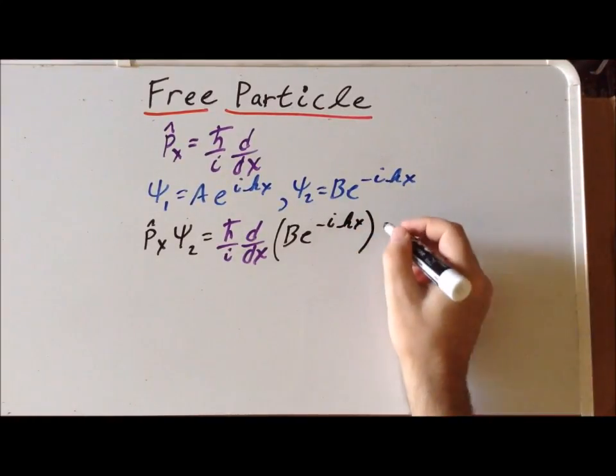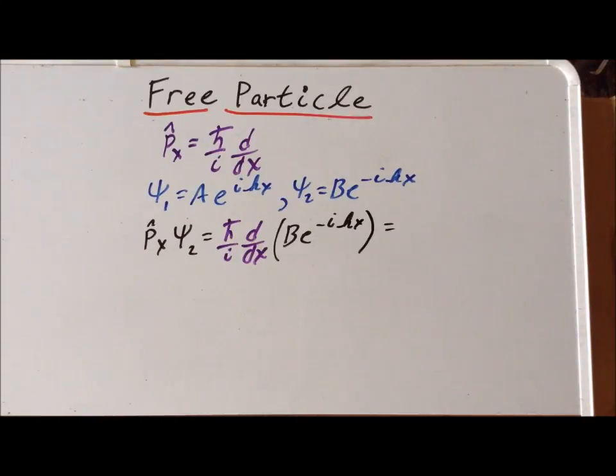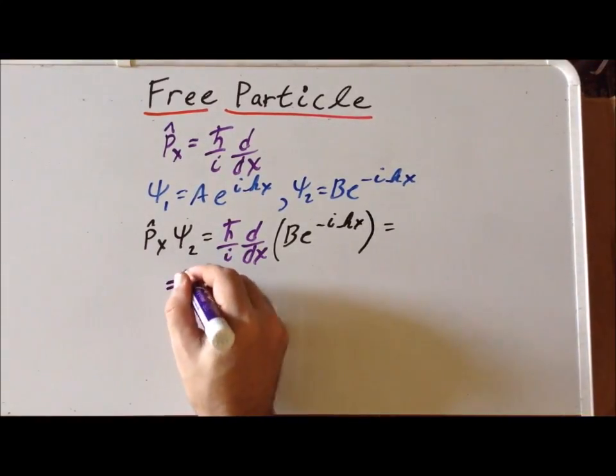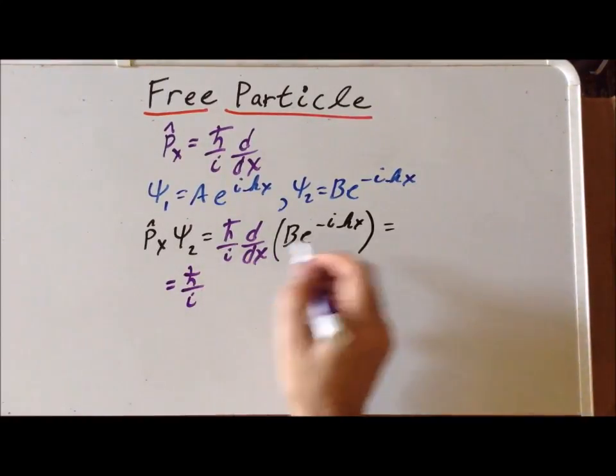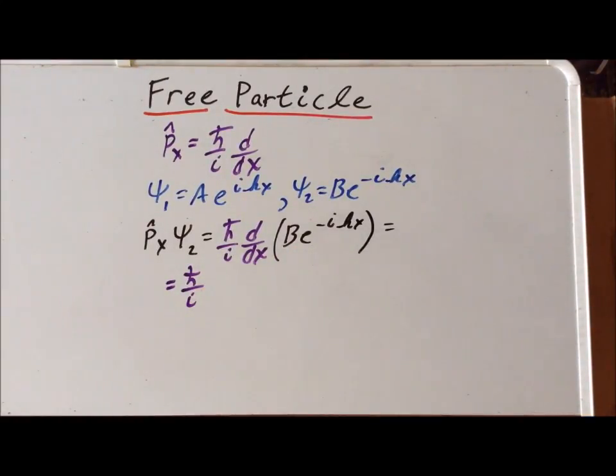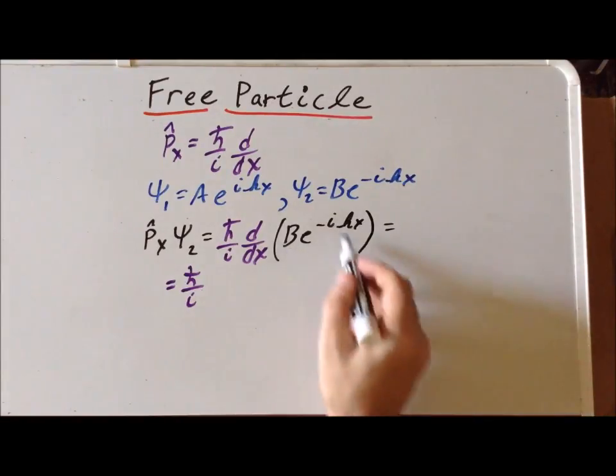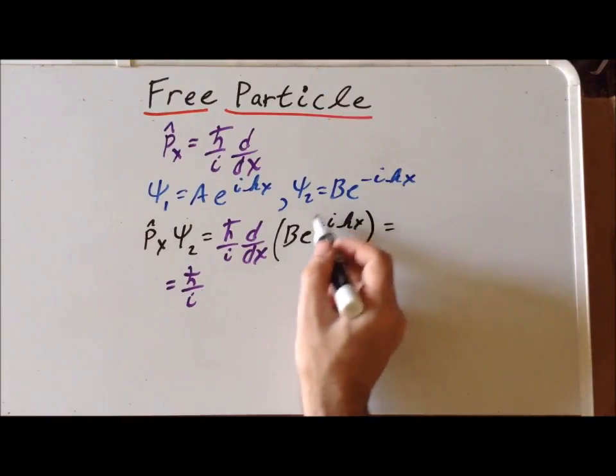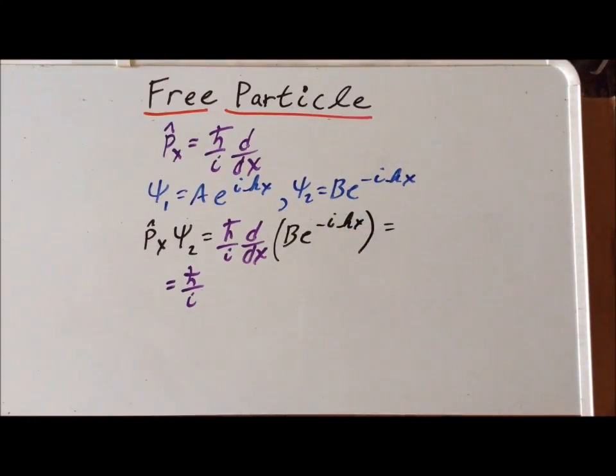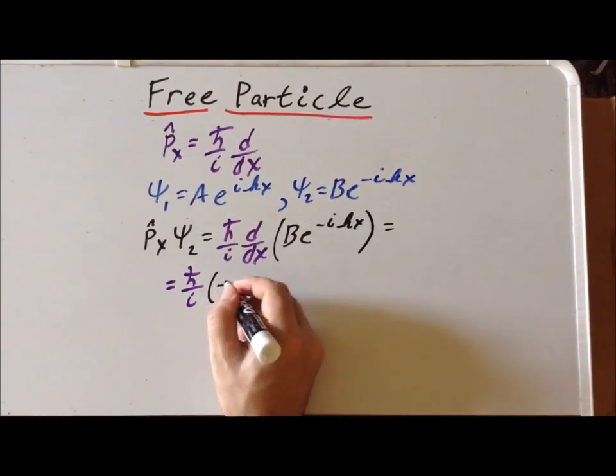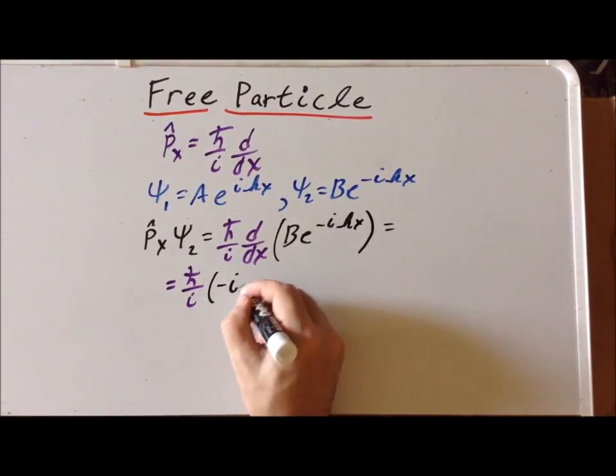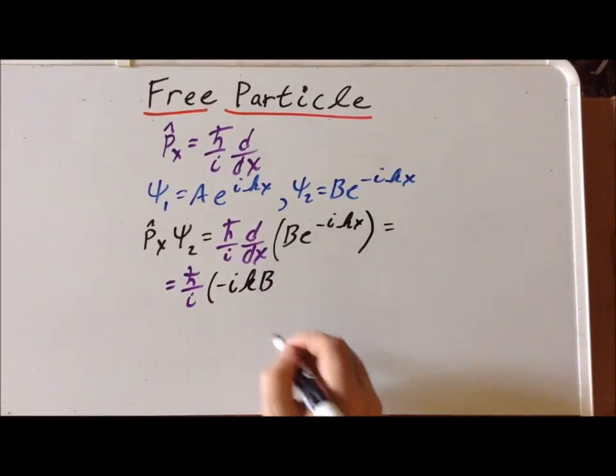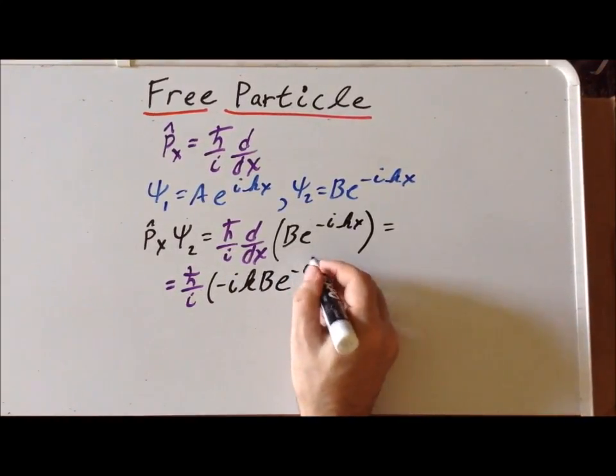And again we can factor out h-bar over i. And then we're going to write out in explicit form the first derivative with respect to x of this wave function. When we have the first derivative of an exponential, we bring the coefficient of the variable in front. So it gives us minus i times k, and then the coefficient B, and we continue with e to the minus i kx.